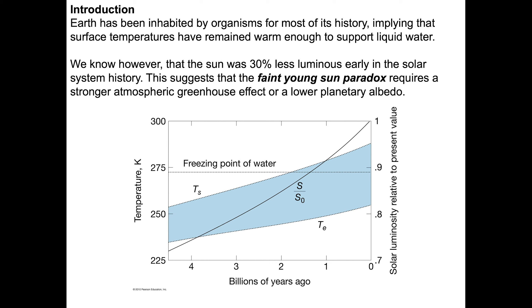The Earth has been inhabited by organisms for most of its history. This implies that surface temperatures have remained warm enough to support liquid water — an obvious critical requirement for life. We know, however, that the sun was 30% less luminous early in solar system history. This suggests that the 'faint young sun paradox' requires a stronger greenhouse effect or a lower planetary albedo.